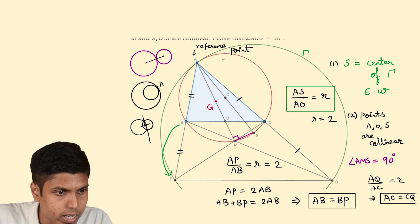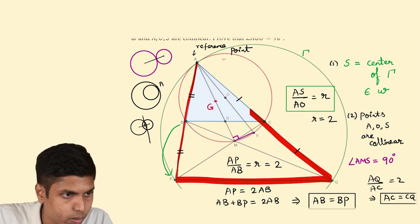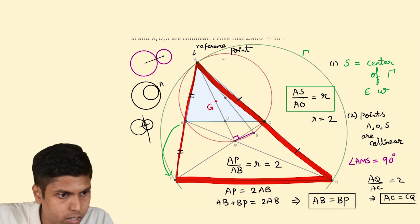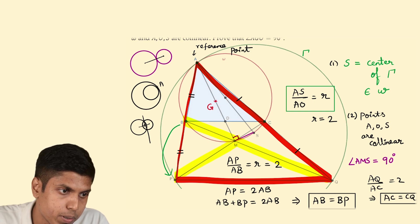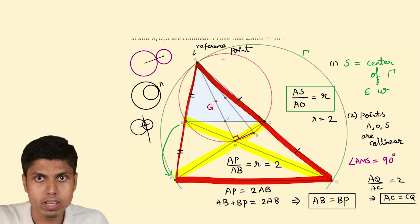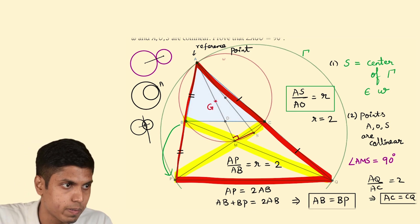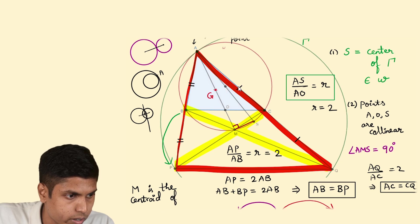Notice that in the bigger triangle APQ, QB is the median through Q and PC is the median through P and they intersect at point M. So M is the centroid of triangle APQ. We can conclude that M is the centroid of triangle APQ.